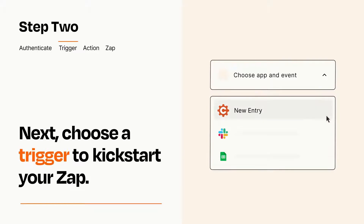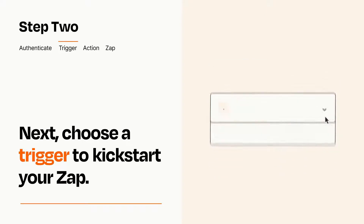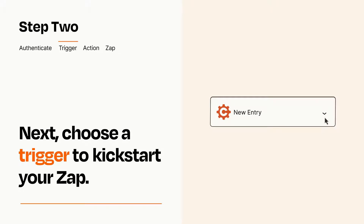Now let's set up your trigger, which is the event that starts your Zap. Pick the trigger event that you want from the list. When you set up this step, your Zap will pull in test data from your trigger app, that you'll see later when setting up your action app.